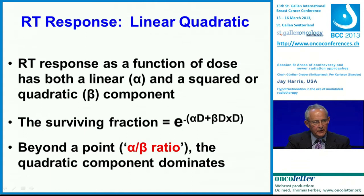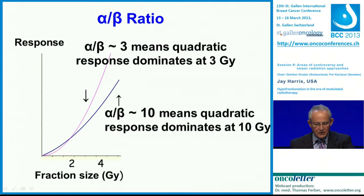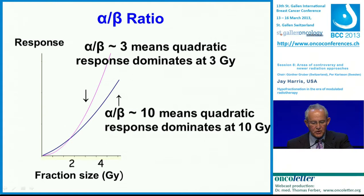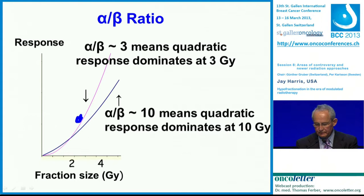Radiation response has a linear-quadratic relationship. It has a linear component and a squared or quadratic component, and this has been shown in multiple systems — in cell culture, in animal models, and in the patient. The alpha-beta ratio is the point where the alpha and beta components are equal, so that beyond the alpha-beta ratio, the quadratic component dominates. The alpha-beta ratio of 3 is shown on the upper curve, and the alpha-beta ratio of 10 is shown on the lower curve. With the alpha-beta ratio of 10, the quadratic response begins to dominate only at 10 gray, which is well beyond where this curve is drawn.